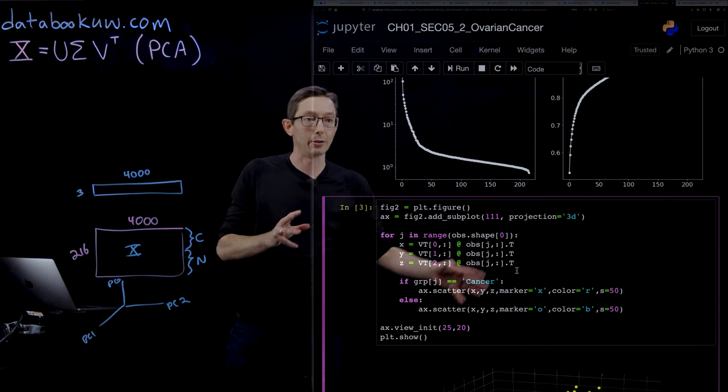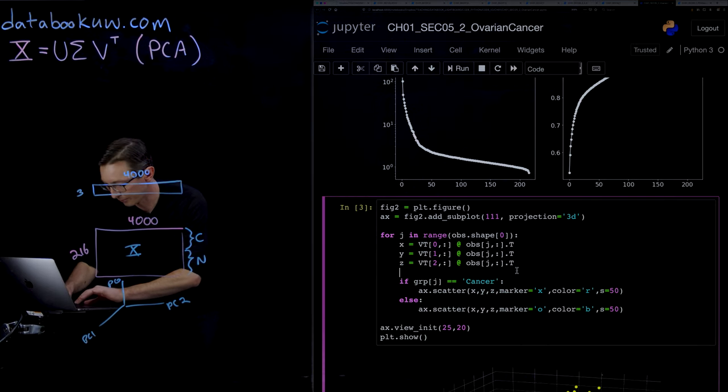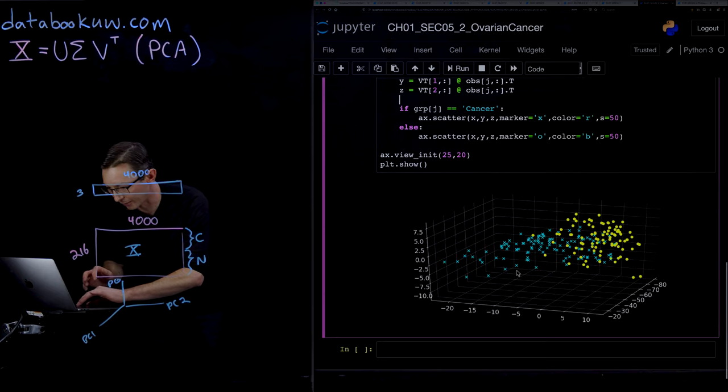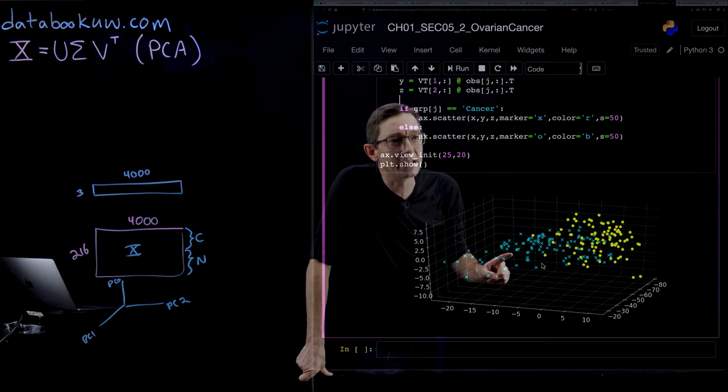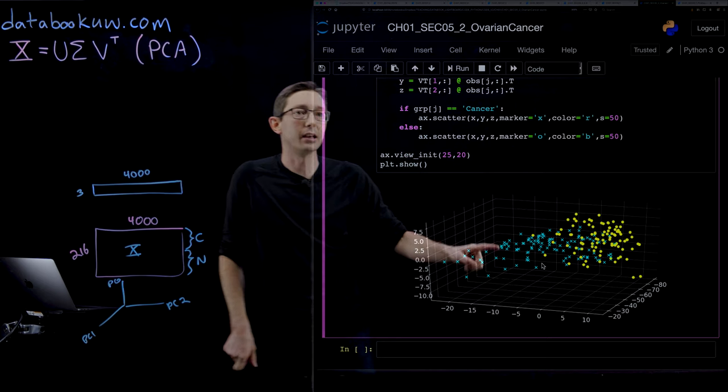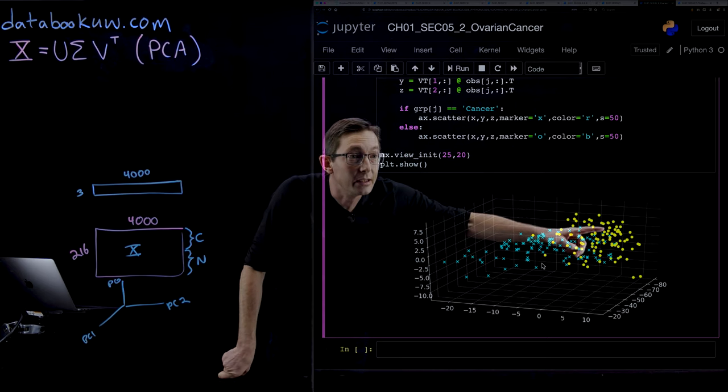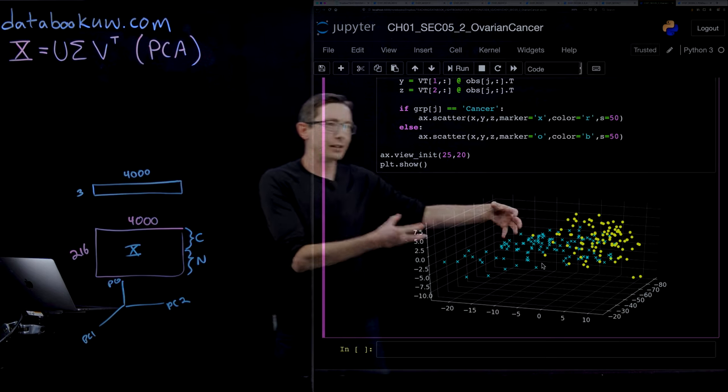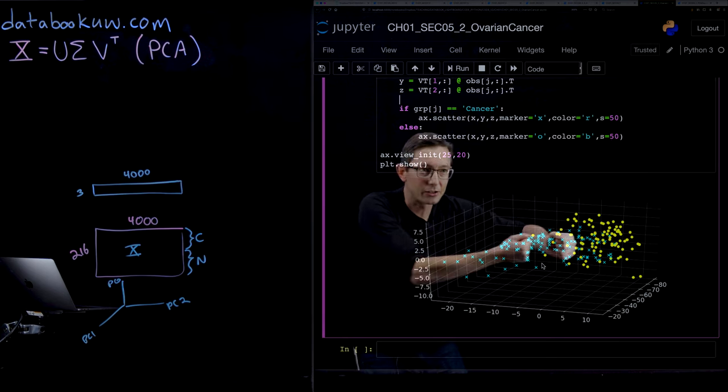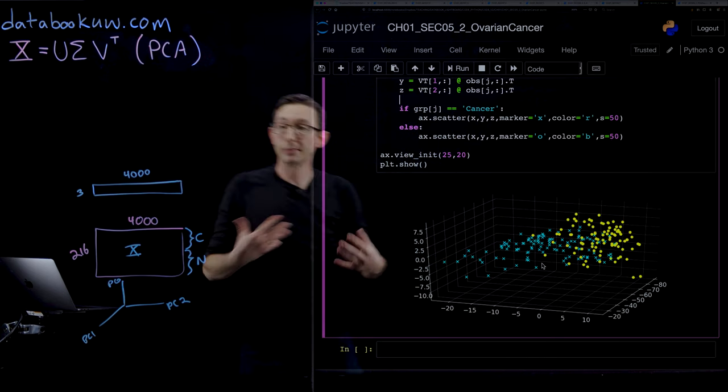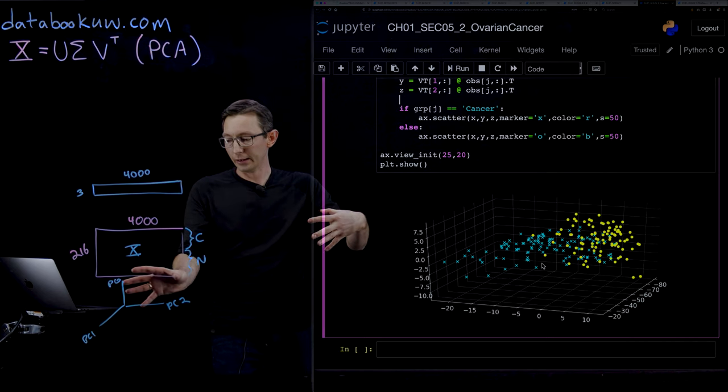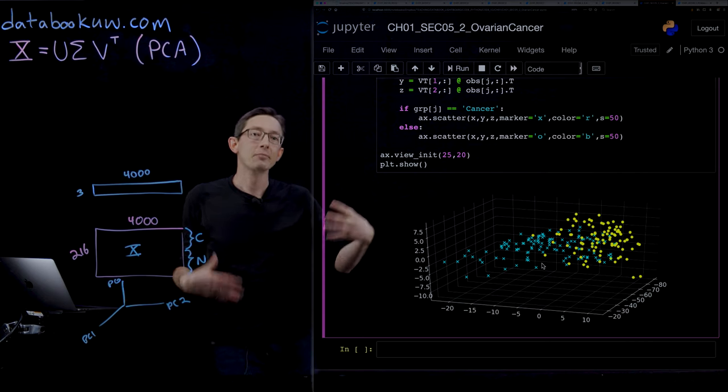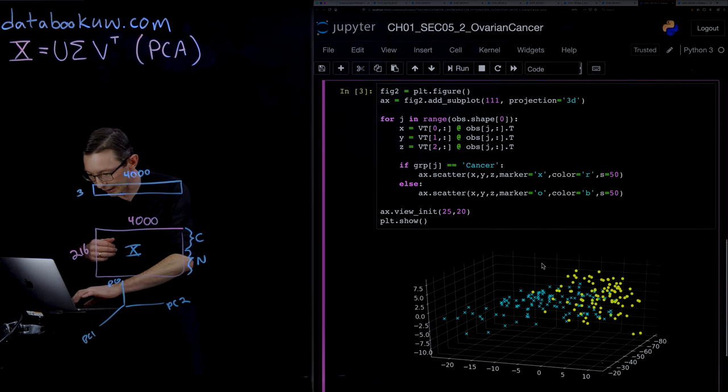Here's what we have in the plot. You can see that the X's are the patients with cancer, the circles are the patients without cancer, and very nicely this data actually does kind of separate in these principal component directions. You get reasonably good separation in these first three principal components.